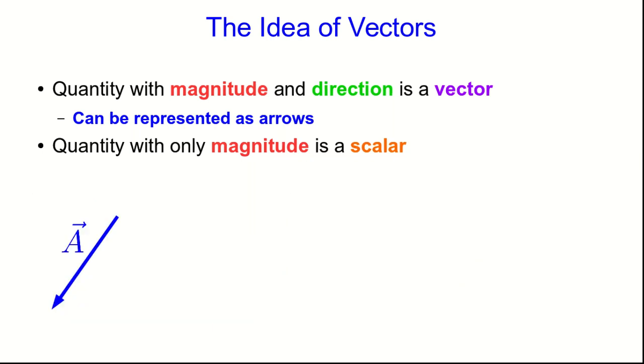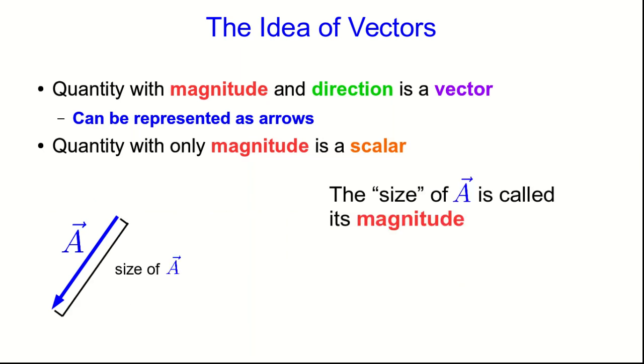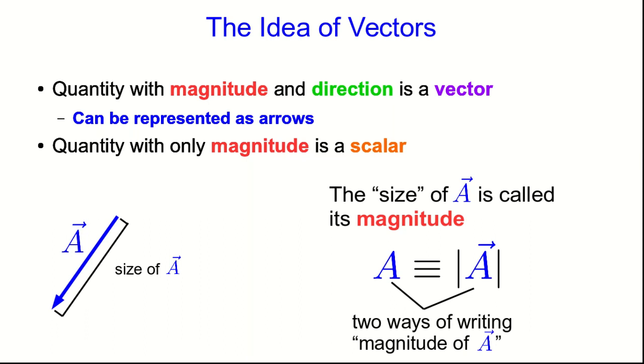Let's go back to thinking about this vector A that I drew. I've drawn it with some length, and we can think of that as representing its size. But note, A might not be a vector that's measured in units of length. It could be a velocity, or a force, or an electric field, so it could have other units. Nonetheless, it has some size, which we call its magnitude, in whatever units that would be measured. And we represent the magnitude of A by simply writing A without the vector symbol on it. Or alternatively, we write the A vector inside absolute values. So these are two ways of writing the magnitude of A.